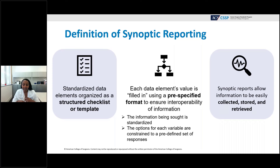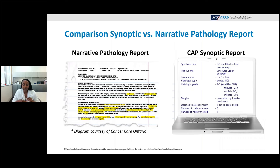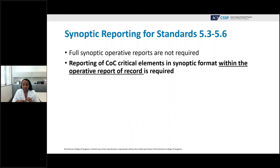The best existing example of synoptic reporting is pathology synoptic reporting. In a narrative report you have to search for the information you need, and important data may or may not be present. In a synoptic report, margin status and tumor size are immediately clear. That is the same idea behind synoptic operative standards reporting. Full synoptic operative reports are not required — only the specific critical COC elements need to be reported in synoptic format, within the operative report itself, not a separate note.